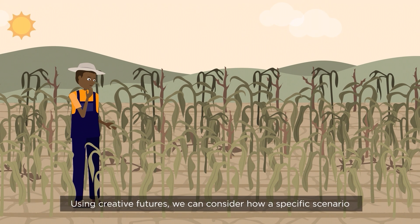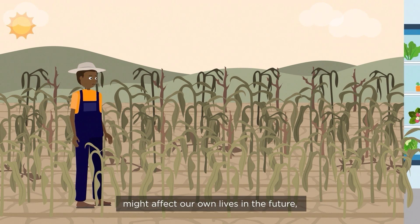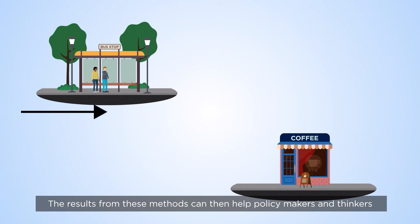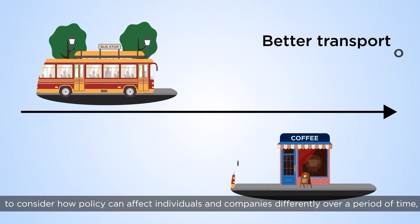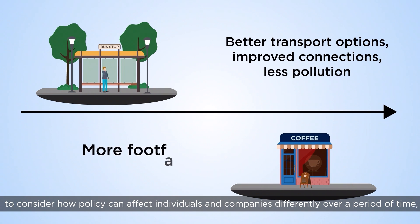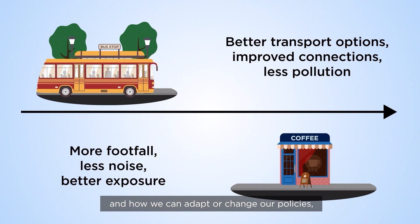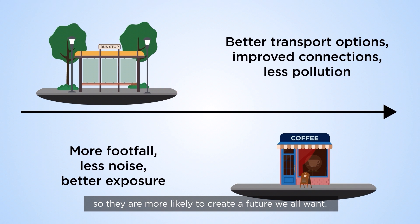Using creative futures, we can consider how a specific scenario might affect our own lives in the future, or we can try to describe what our ideal future may look like. The results from these methods can then help policy makers and thinkers to consider how policy can affect individuals and companies differently over a period of time, and how we can adapt or change our policies so they are more likely to create a future we all want.